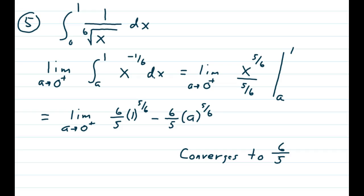And we have then a limit as A approaches 0 from the positive side. Using the power rule, we have x to the 5/6ths over 5/6ths being evaluated from 1 down to A.